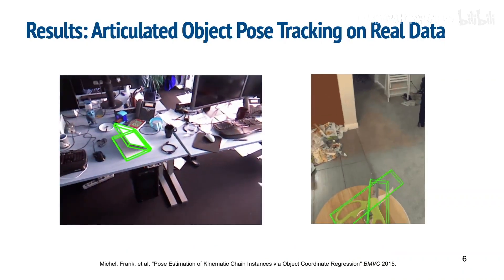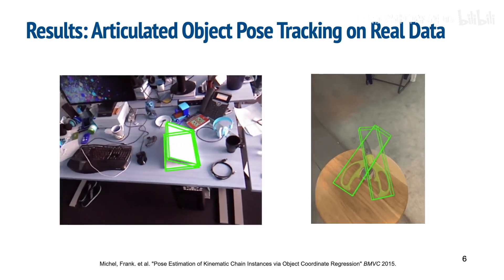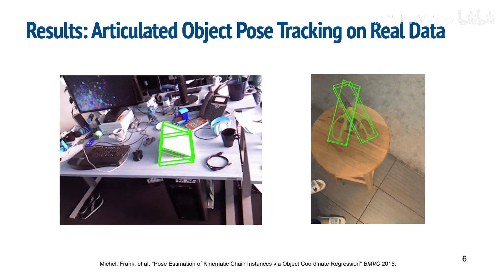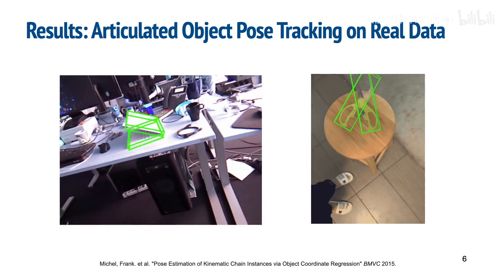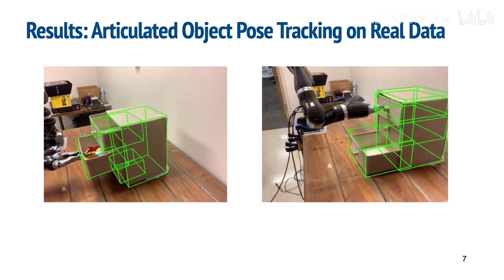Our model, trained only on Sapien synthetic dataset, can directly generalize to novel real laptop or scissors trajectories without ever seeing real data during training. It also successfully generalizes to novel real drawers under robotic interaction.